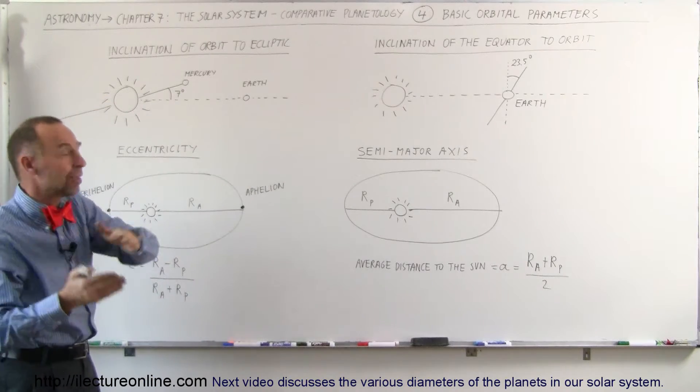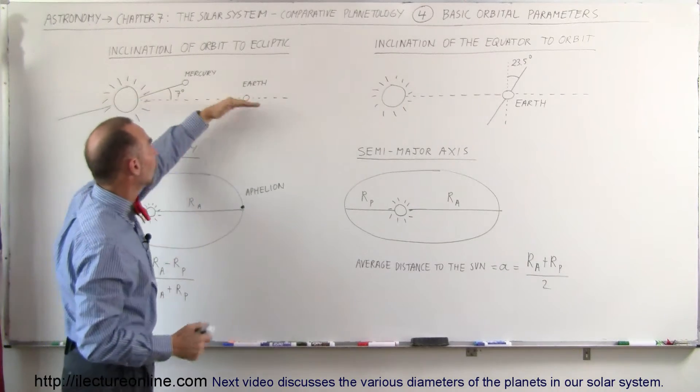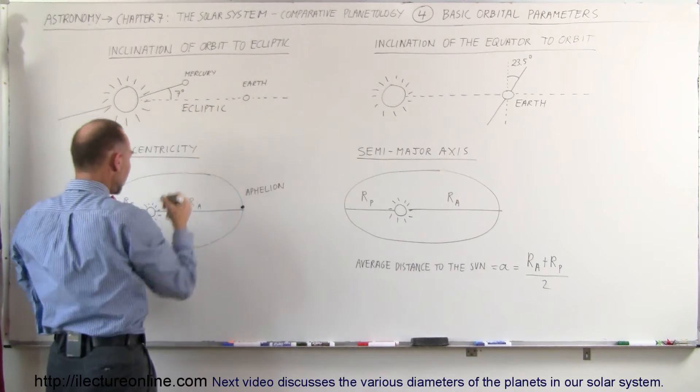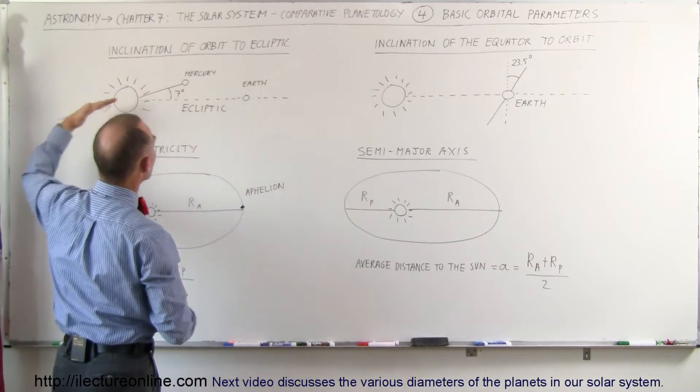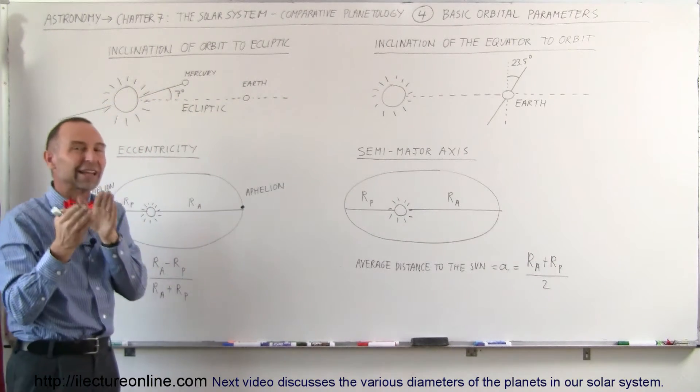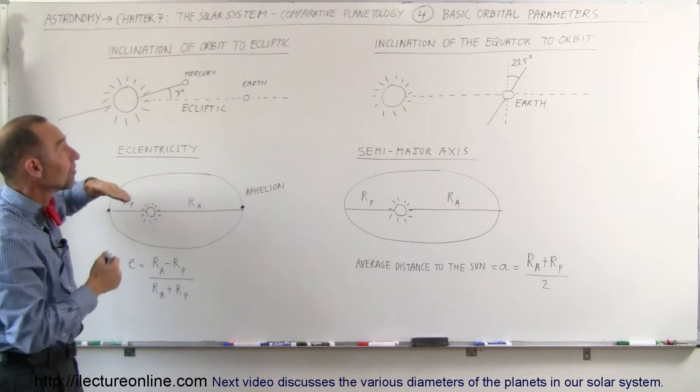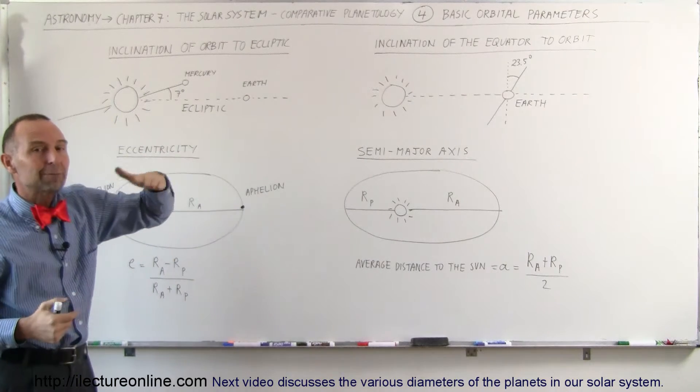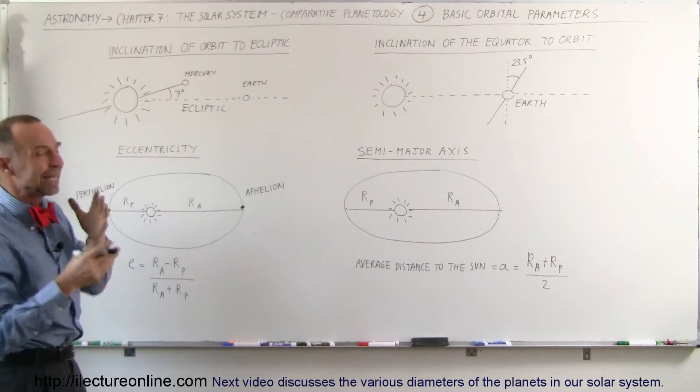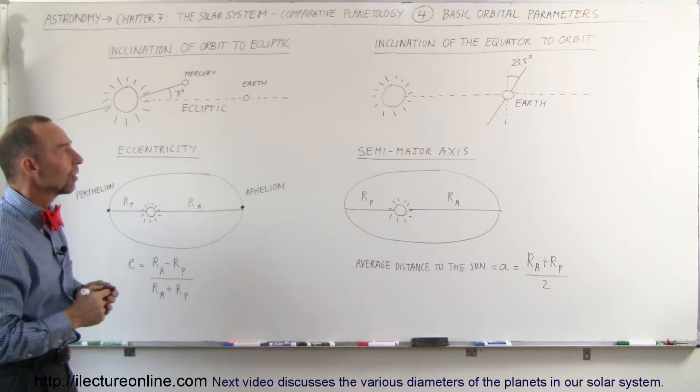And since everything is based upon the orbit of the Earth, this is called the ecliptic plane. You can see that the orbit of Mercury then makes a 7 degree angle with the ecliptic plane. And so we compare every planet's orbit and every asteroid's orbit and every comet's orbit to that ecliptic plane to get a feel of how it orbits around the Sun.